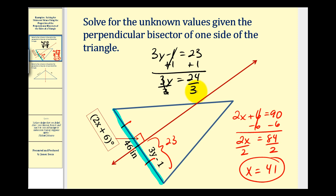Well 24 divided by 3 equals 8, so we have y equals 8. Let's check that. 3 times 8 would be 24 minus 1 would be 23 or 23 inches.